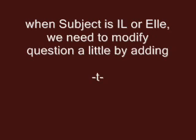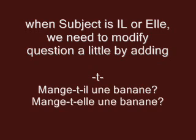If the subject in the sentence is il — like il mange une banane, he eats a banana — or elle, she eats a banana, elle mange une banane, would you say mange-elle une banane? No. You will have to do a little modification: you add a dash, then t, then another dash between the verb and the subject. So it will be mange-t-il une banane or mange-t-elle une banane? This is done simply to ensure a better sound, nothing else — there is no particular grammatical function of the dash-t-dash.